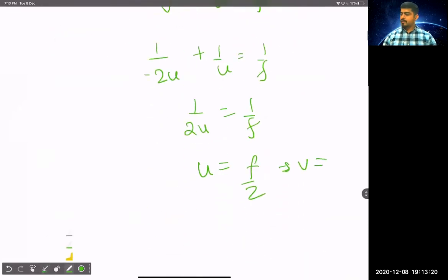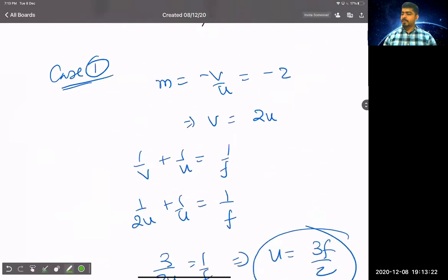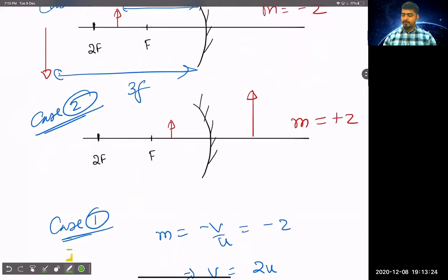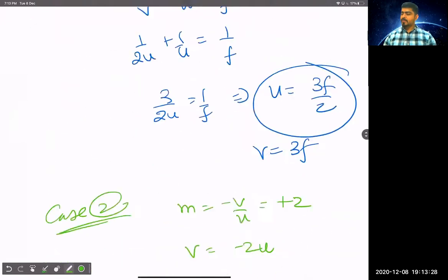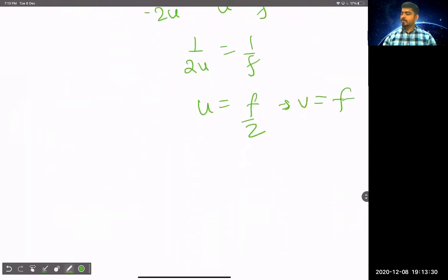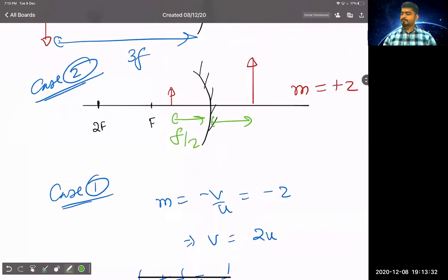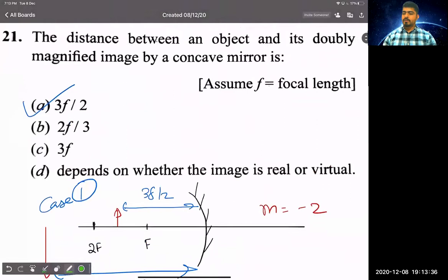So magnitude wise, this distance is F by 2 and this distance equals F. So again 3F by 2, so again same answer, option A. Both cases your answer is same, option A. Is that clear, okay?